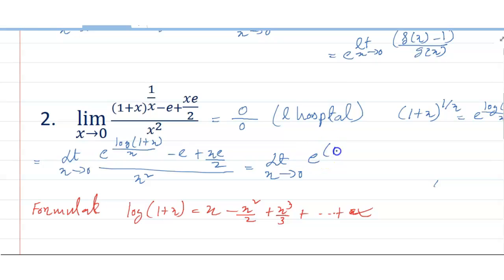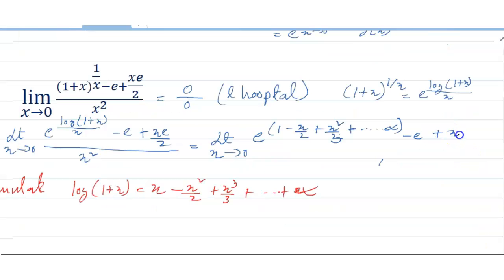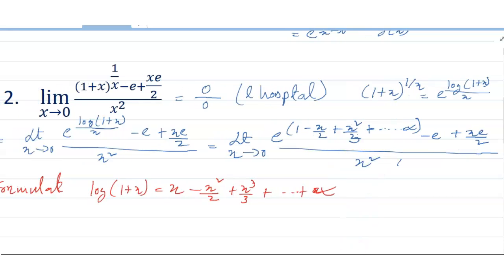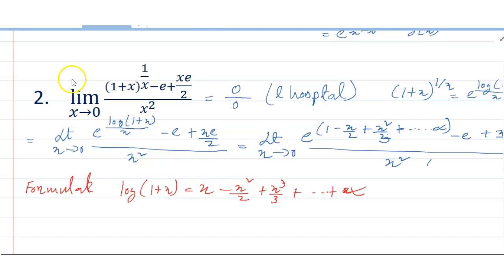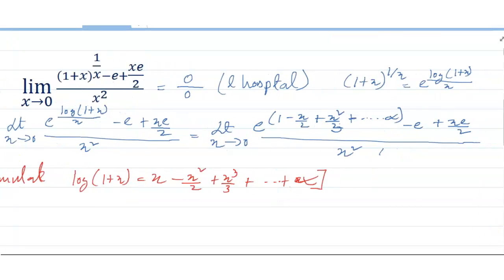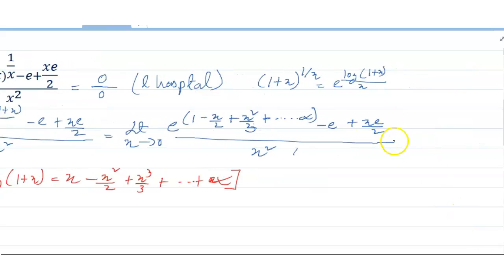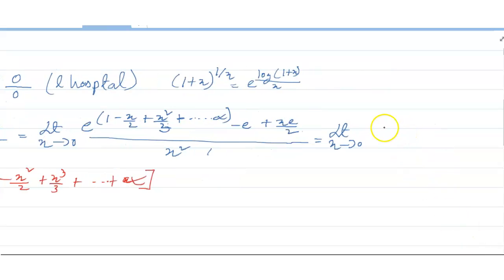So what I get is e to the power of (1 minus x divided by 2 plus x squared by 3, minus and so on up to infinity), divided by x squared. Friends, I use this formula here and now apply L'Hôpital's rule.